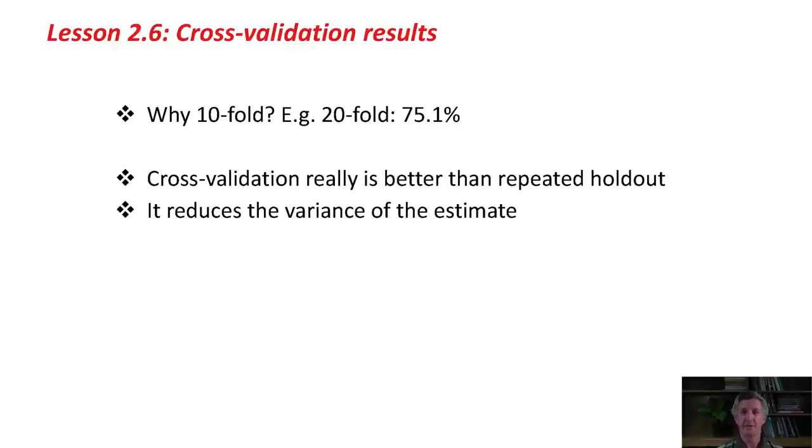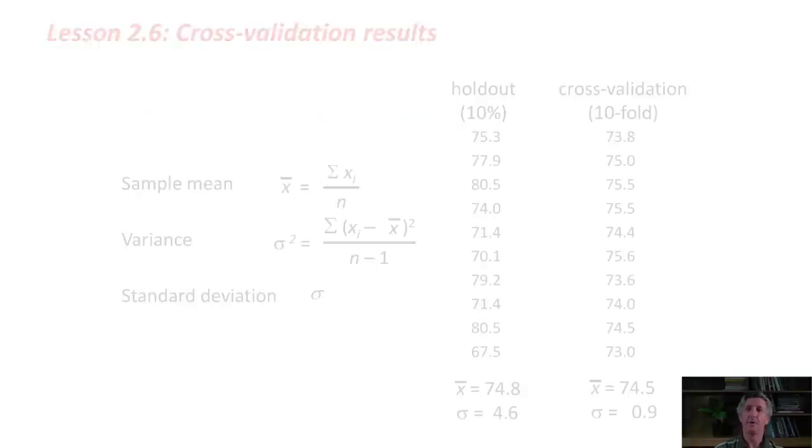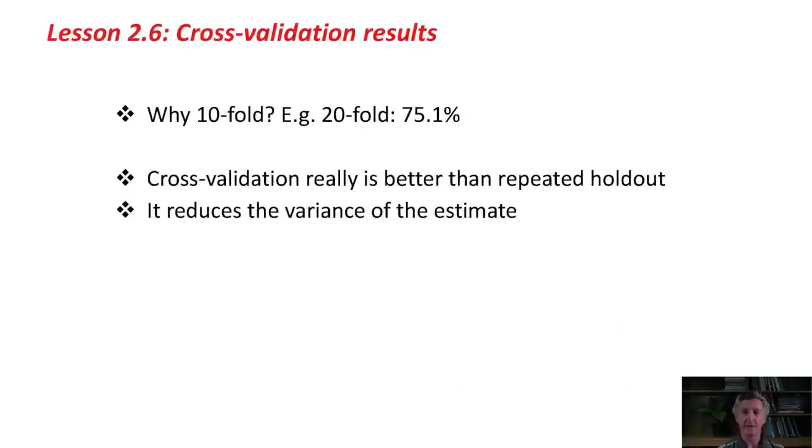We've shown in this lesson that cross-validation really is better than repeated holdouts. Remember, on the last slide, we found that we got about the same mean for repeated holdouts for cross-validation, but we got a much smaller variance for cross-validation. We know that the evaluation of this machine learning method, J48, on this data set, diabetes, we get 74.5% accuracy, probably somewhere between 73.5% and 75.5%. That is actually substantially larger than the baseline, so J48 is doing something for us better than the baseline. Cross-validation reduces the variance of the estimate.